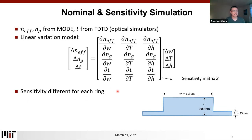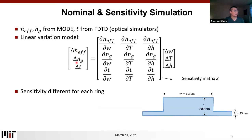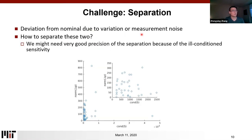Jing Zhang will tell us more about the challenges. So, the general workflow describes how we try to extract all these process variations from our measurement data. There are some challenges with using this simple workflow. Firstly, we are trying to extract variations from the deviations of these physical properties, but all these deviations are a mix of the variation and the measurement noise. In some cases the noise is so large that it is almost overwhelming, and we're unable to extract the actual variation. Furthermore, the sensitivity matrix has some ill-conditioning, with conditioning numbers on the order of a few hundreds.